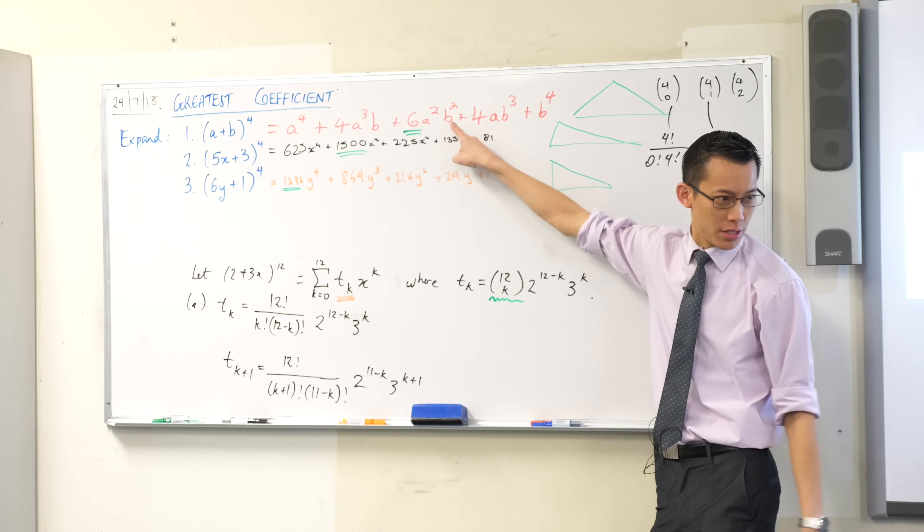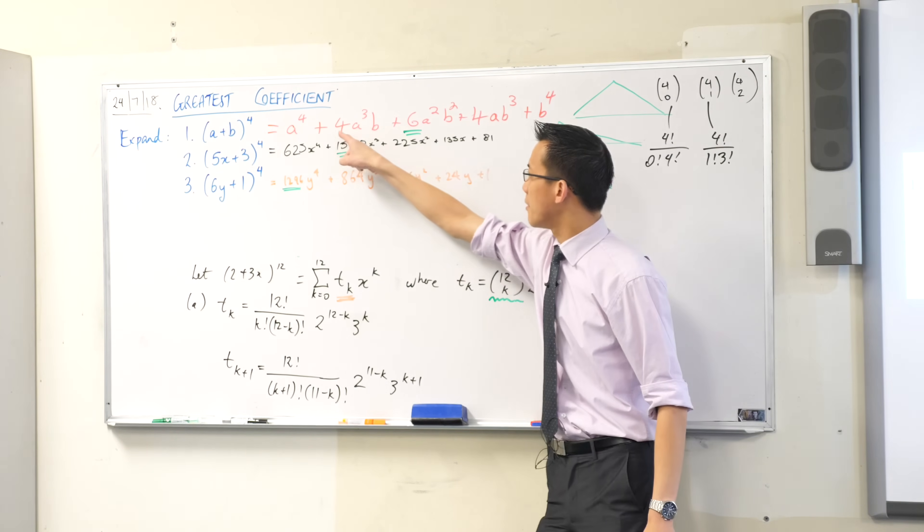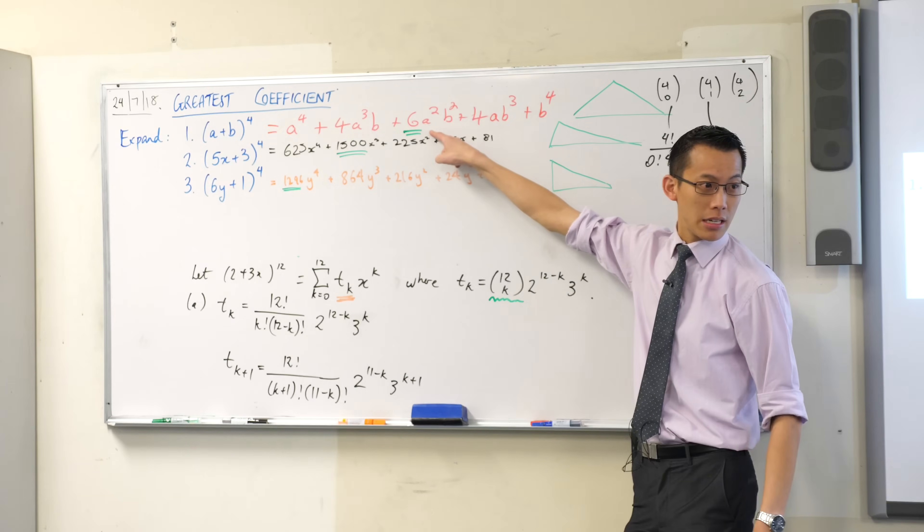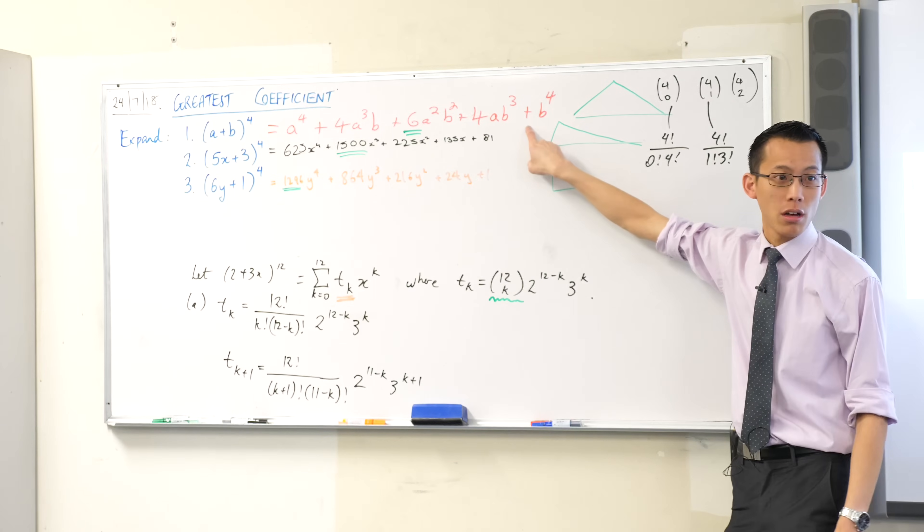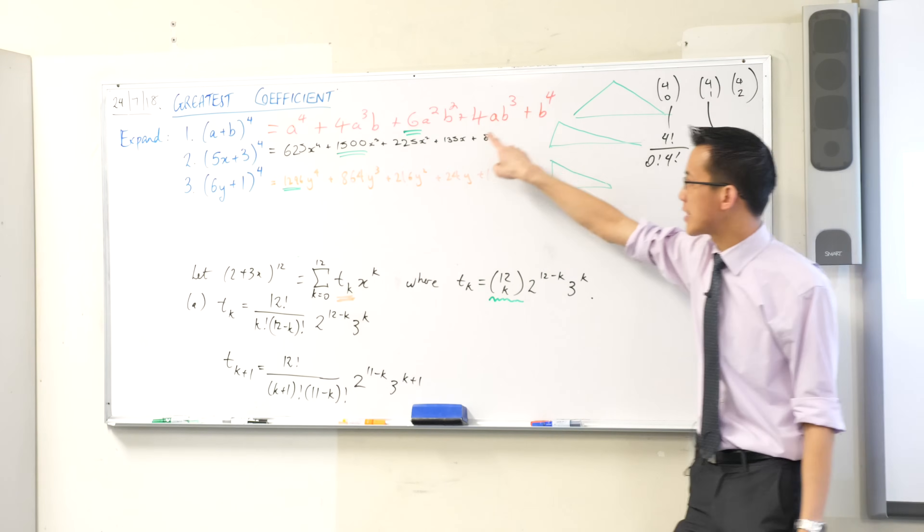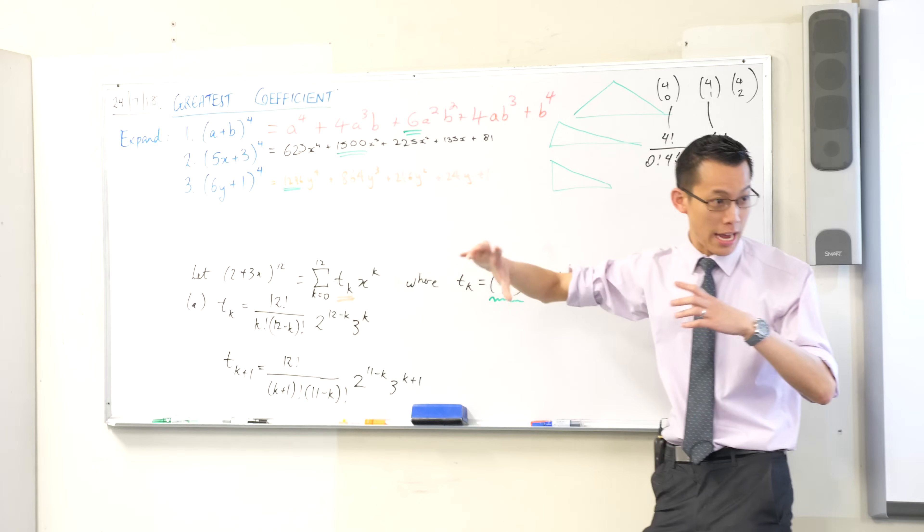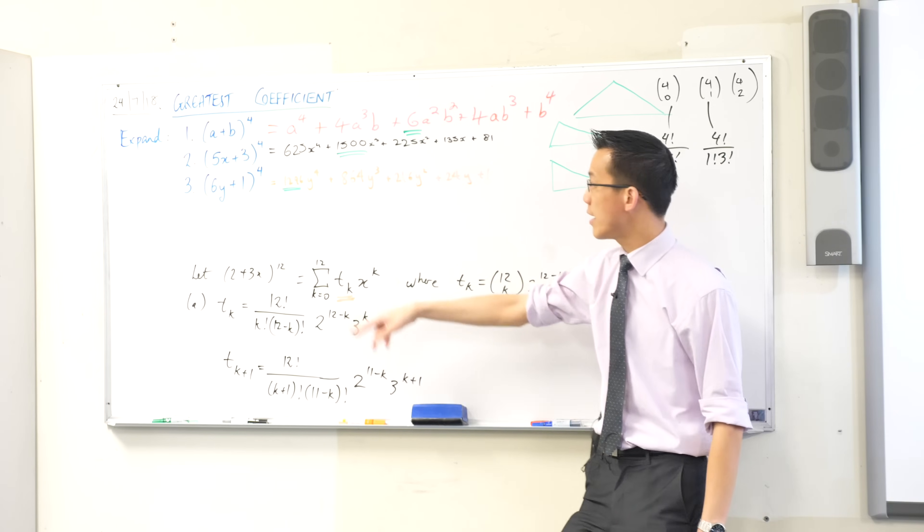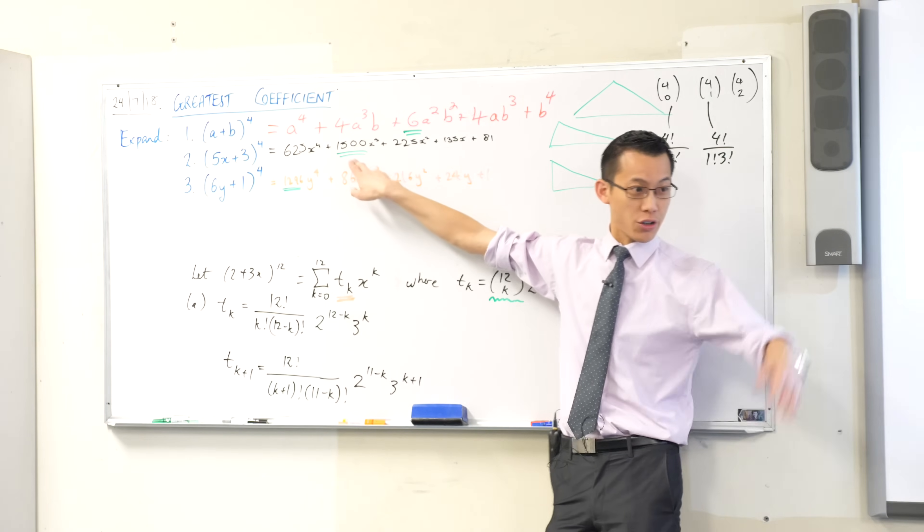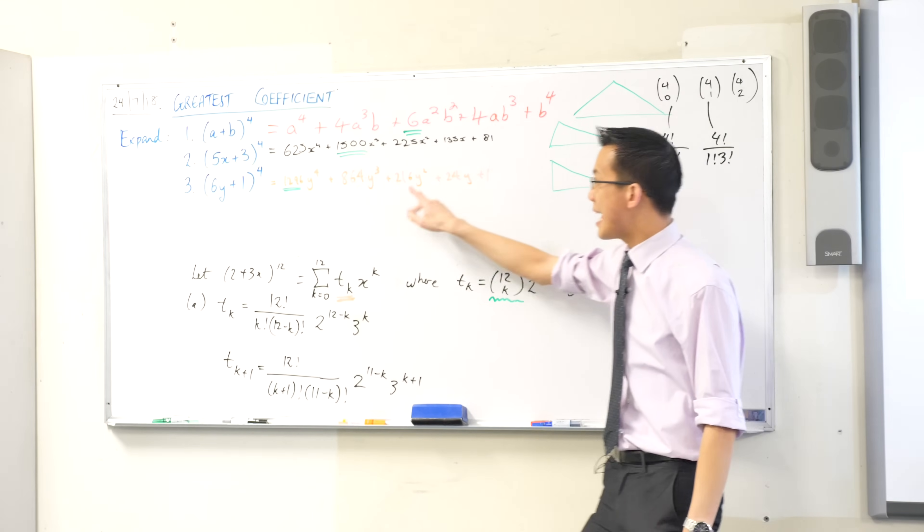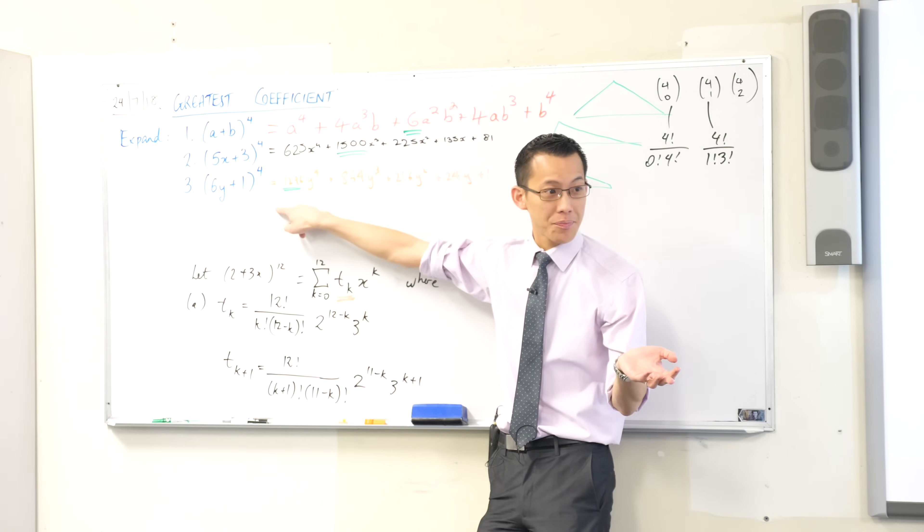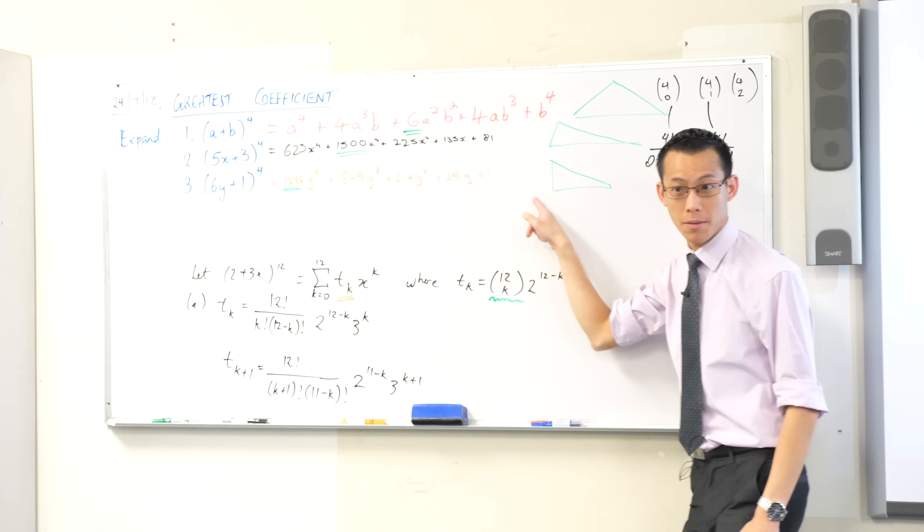If you work them all out, then you can clearly see that's the biggest one. But we know how tremendously inefficient that is. If you've got lots and lots of terms, this is going to be a very time-consuming way to go about things. Let's have a look at the original situation. They get bigger and bigger and bigger, you hit your maximum, and then after that they get smaller and smaller.